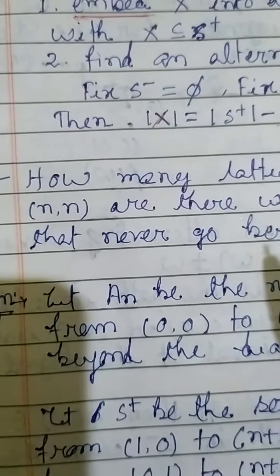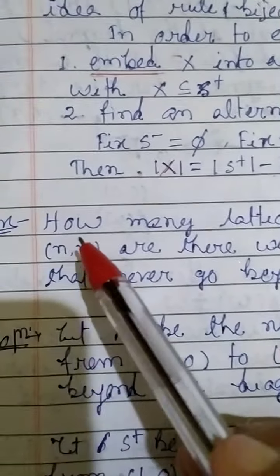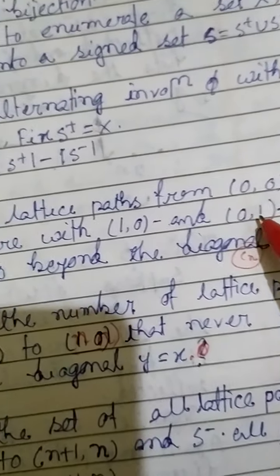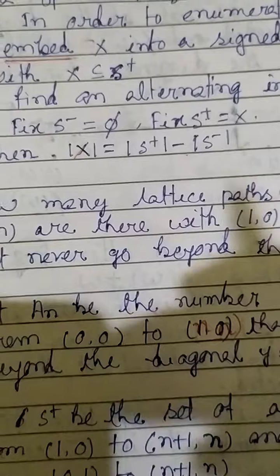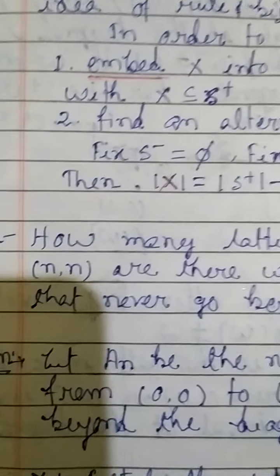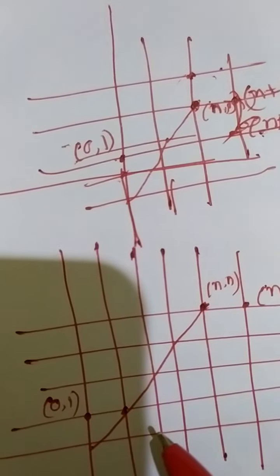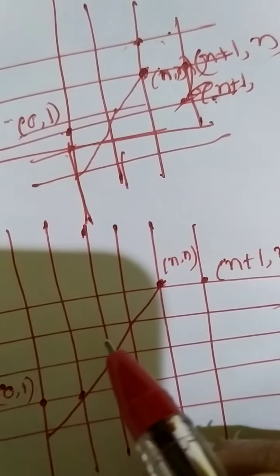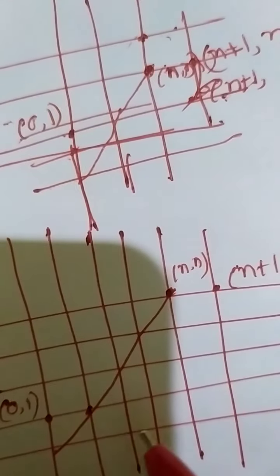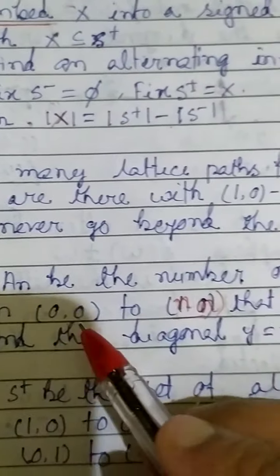Now consider an example using Catalan numbers. We already saw this example in class, but here is another method using the Involution Principle. The question is: how many lattice paths from (0,0) to (N,N) are there using steps (1,0) and (0,1) that never go beyond the diagonal?